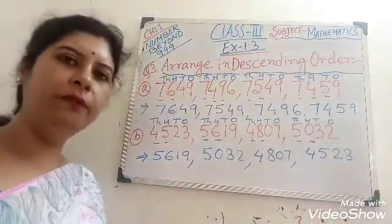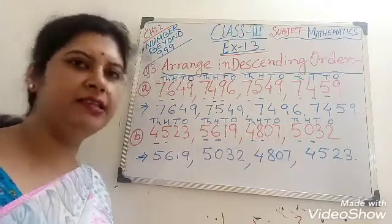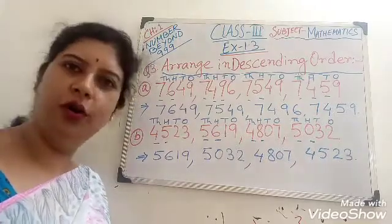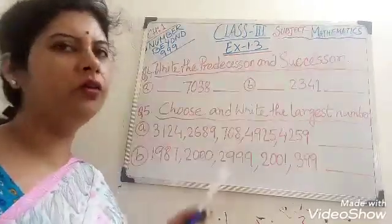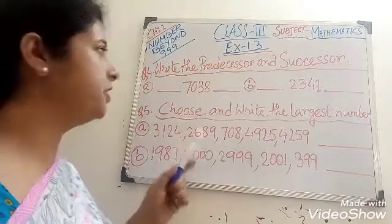So we write down 4,807 and our last smaller number is 4,523. Hope this descending order is clear to you all. Now move on to our next question.